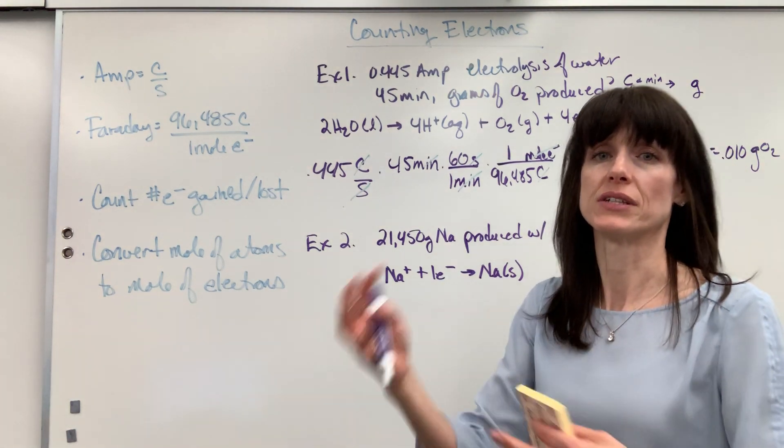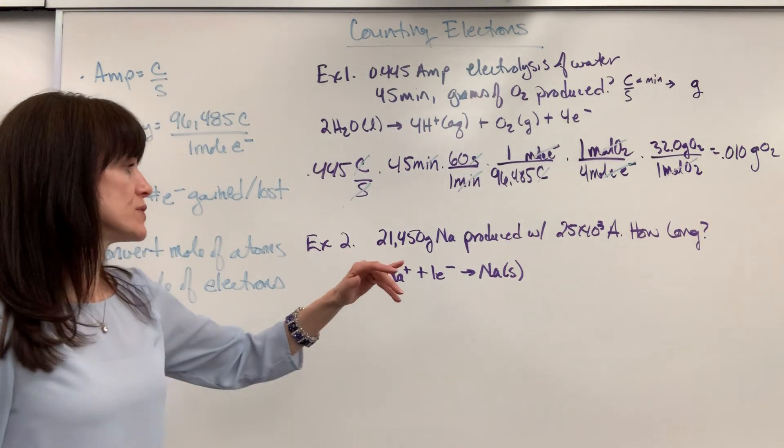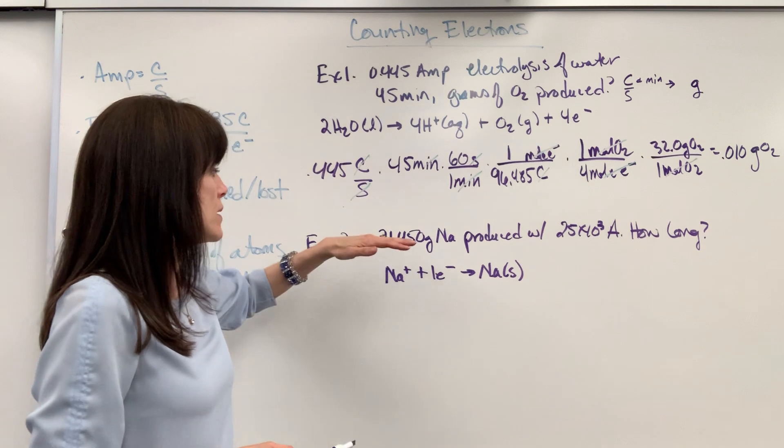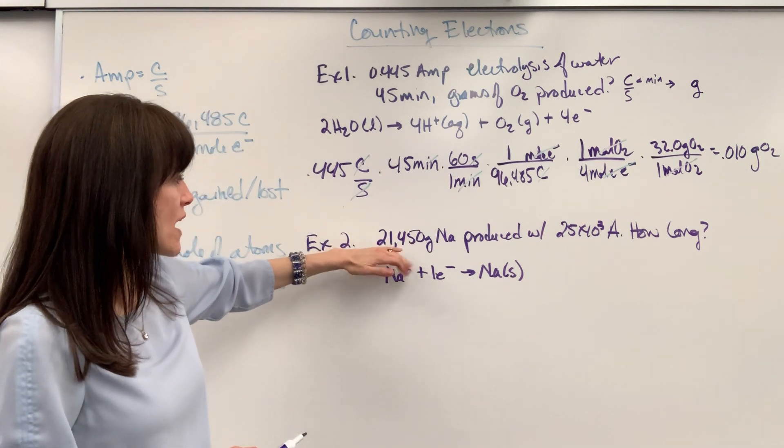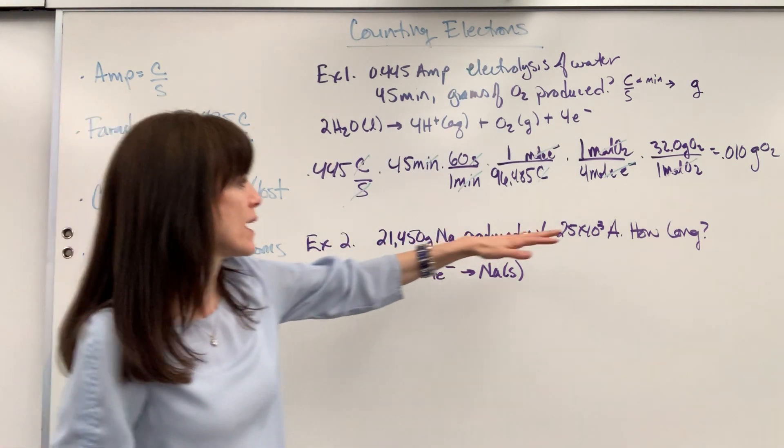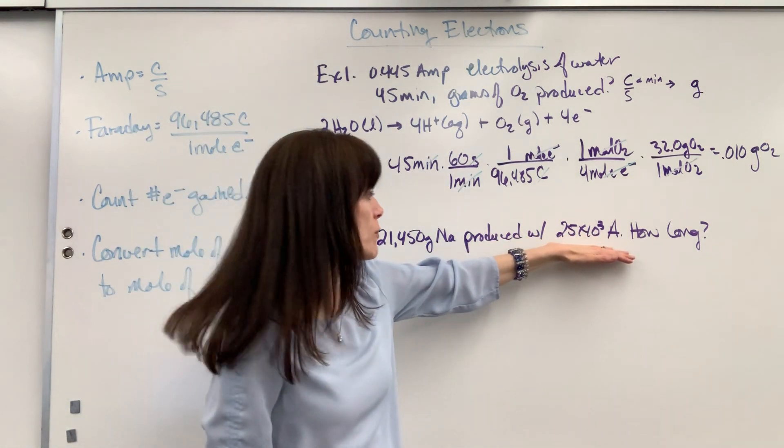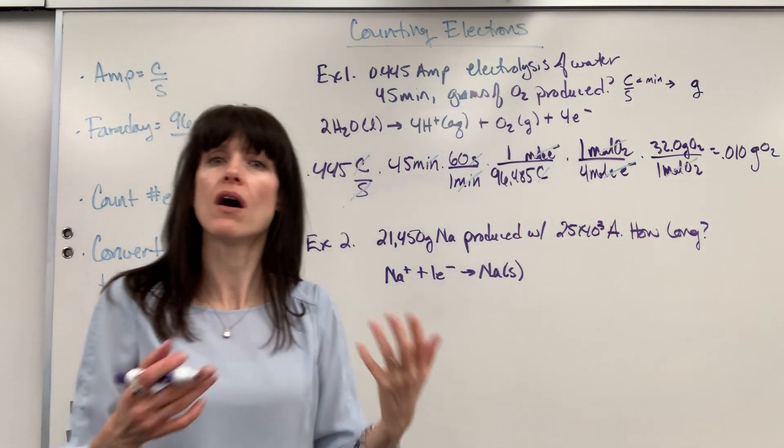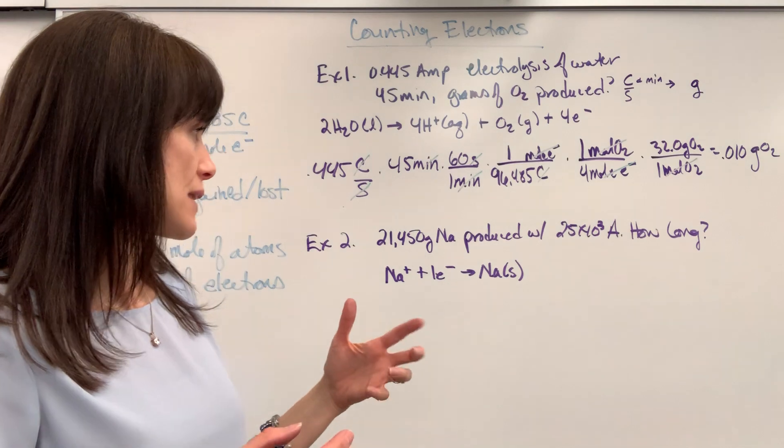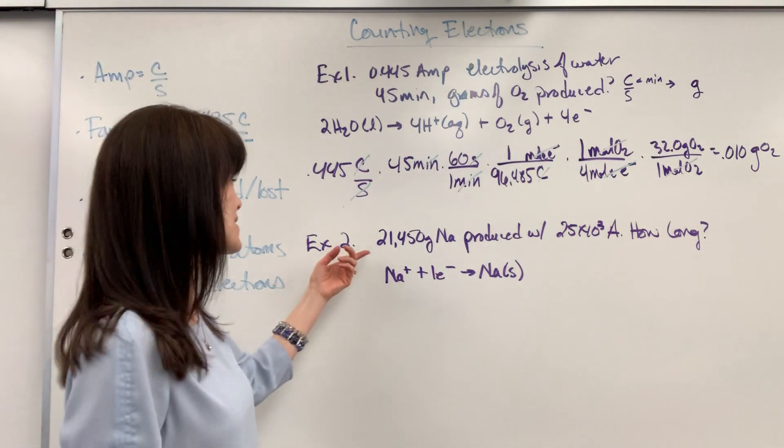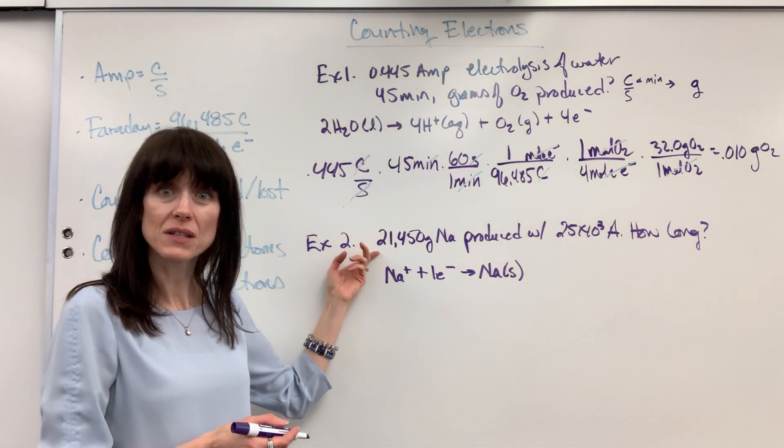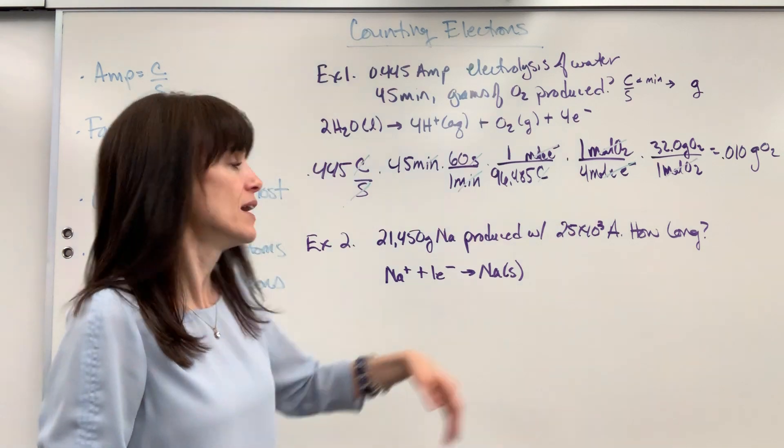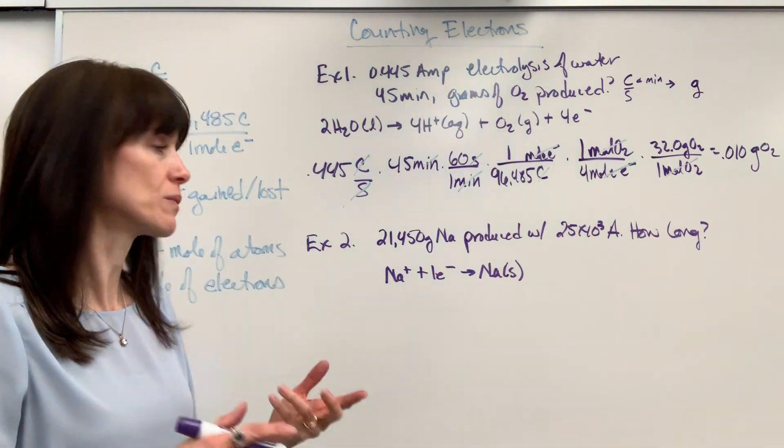Now, this is just opposite. You're given grams. So, they tell you the amount that plates when you do this electrolytic cell, when you put energy into it. So, we're going to plate 21,450 grams of sodium. And the amperage on this is pretty large. We've got 25,000. Wow, 25 times 10 to the 3 for the amps. And they want to know, well, how long? How long do you have to run this electrolytic cell of the 25,000 amps to get 21,000 grams of sodium? So, I wrote down our half reaction. Sodium ion going to a sodium solid.